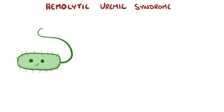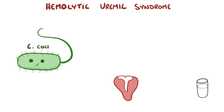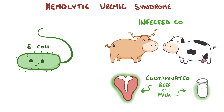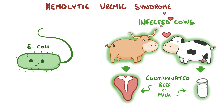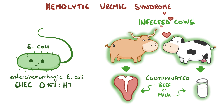Escherichia coli, or E. coli, is usually the culprit, and children often pick it up through contaminated food or drink, like contaminated beef or unpasteurized milk from an infected cow. The particular strain of E. coli responsible for hemolytic uremic syndrome is known as enterohemorrhagic E. coli or EHEC, serotype O157:H7. These numbers and letters refer to the specific antigens on the surface of the bacteria.